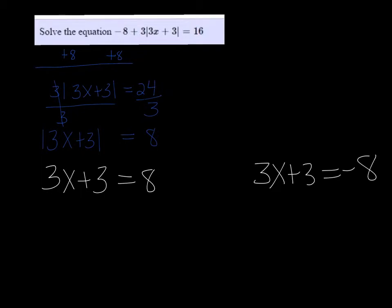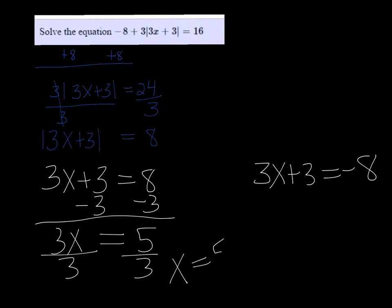So in the first one I'm going to subtract 3 from both sides, I get 3x equals 5. Divide by 3, and I get x is equal to 5 thirds.